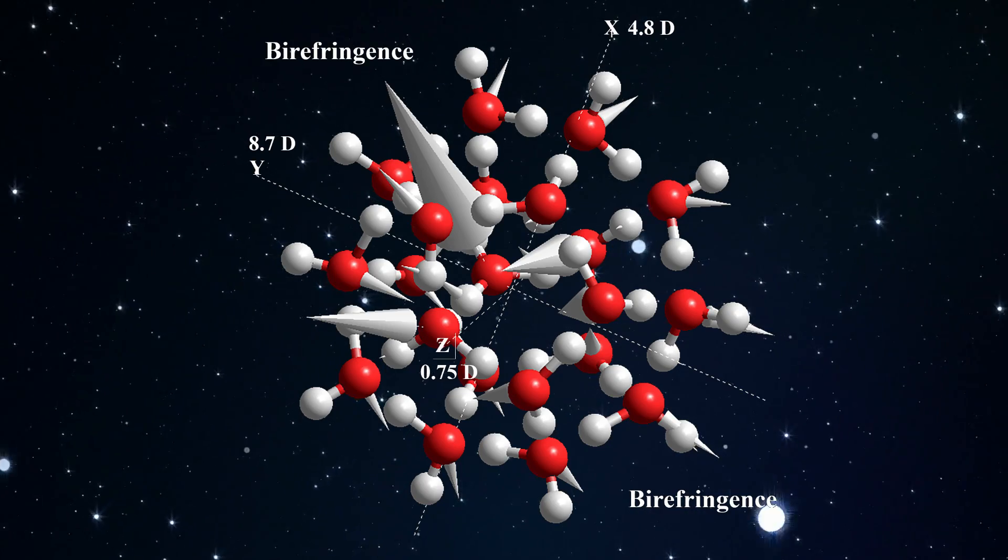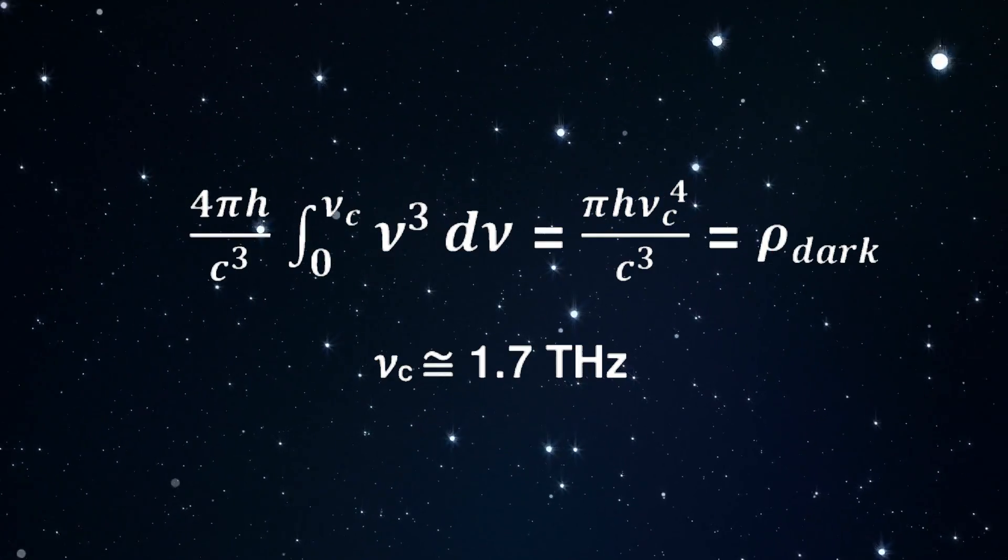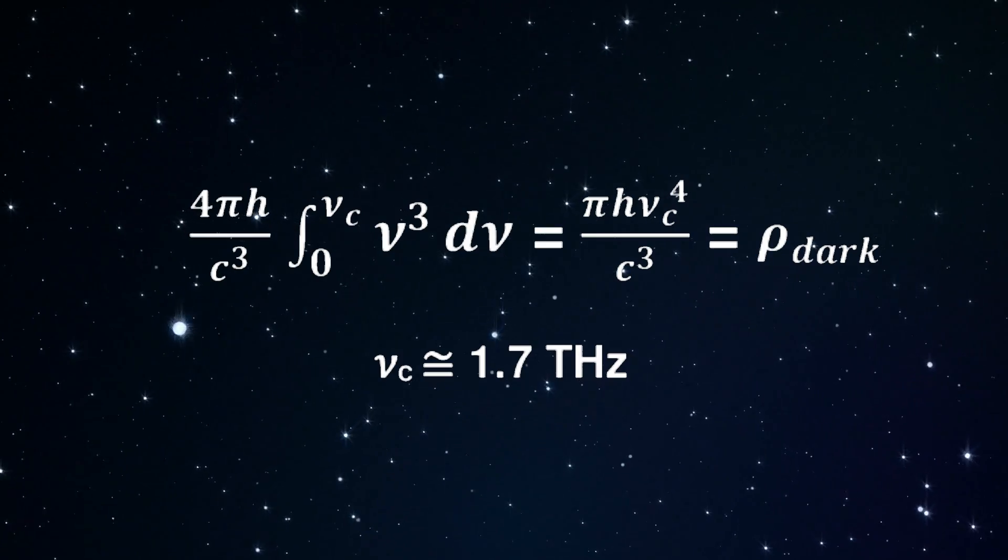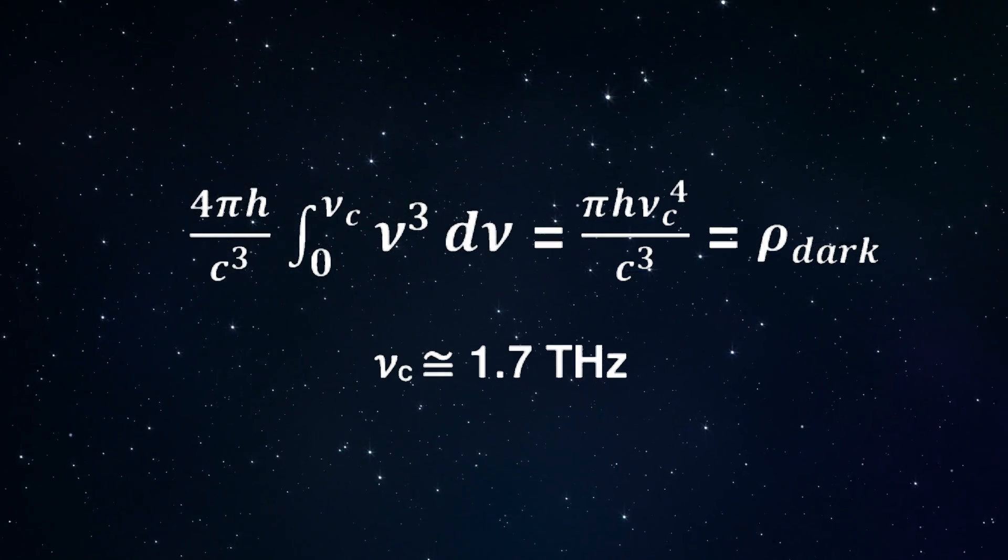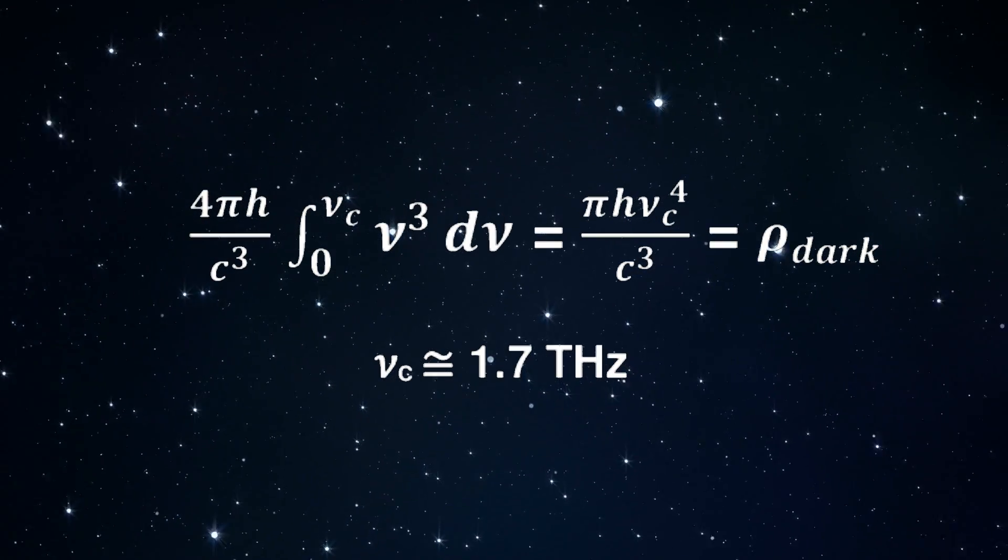For the prominent pentagonal dodecahedral water nanocluster, the cutoff vibrational frequency is approximately 1.7 terahertz. This formula produces the correct small dark energy density, and consequently, the small cosmological constant.